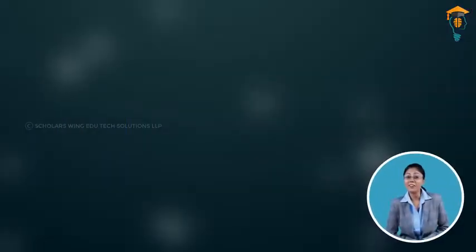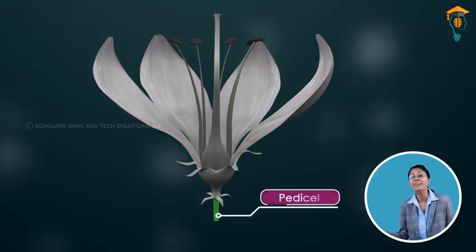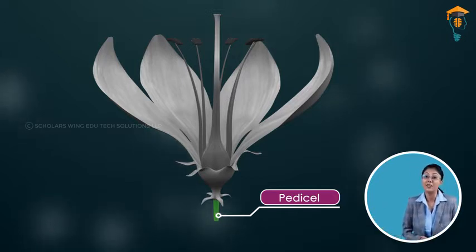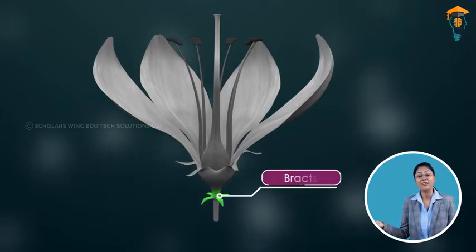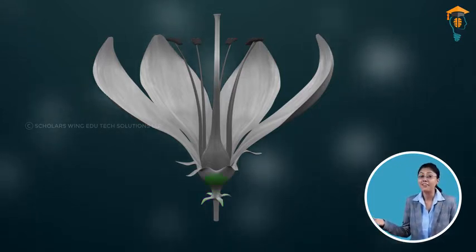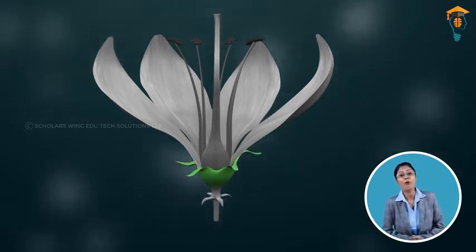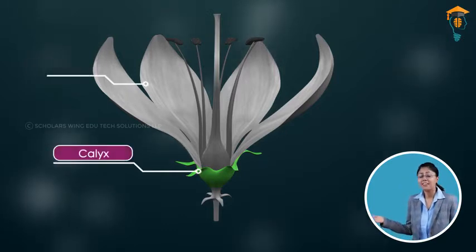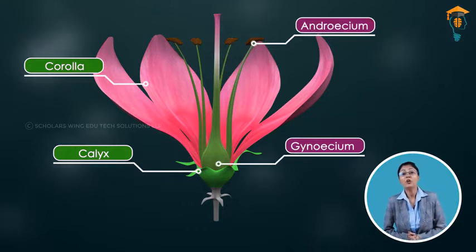In this chapter we will understand each process in detail. First, it is essential to know the sexual structure of angiosperms, which is called a flower. In front of us we have a beautiful flower. At the bottom is a long thin part called the pedicel, which attaches the flower to the stem. Slightly above is the presence of green leaf-like structures called bracts, and above the bracts is a swollen knob-like structure called the thalamus, on which lie the four whorls of the flower: the calyx, the corolla, the androecium, and the gynoecium.